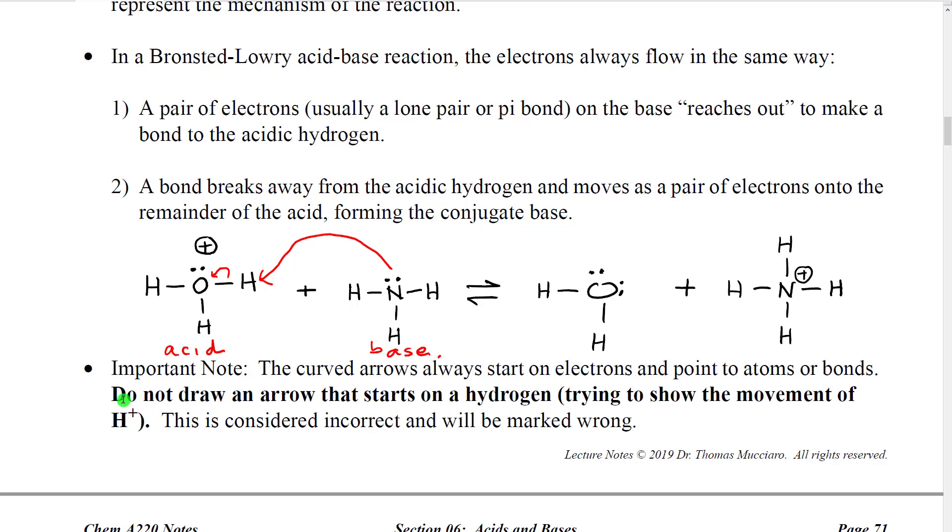Specifically for Bronsted-Lowry acid base, we don't want to make the mistake of starting our arrow on a hydrogen and showing the hydrogen jumping through space. We want to show the hydrogen being grabbed. If you draw your arrow in the wrong direction, it will be incorrect and it will be marked wrong.